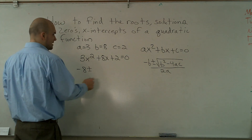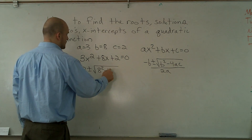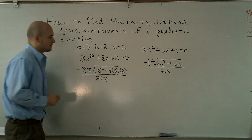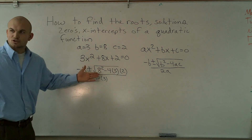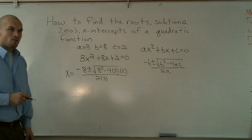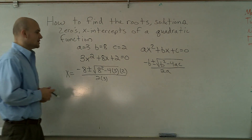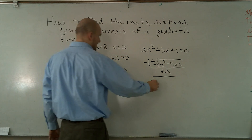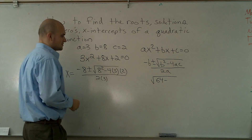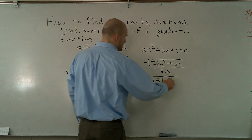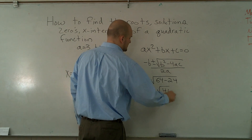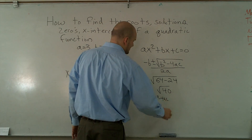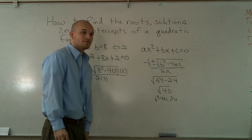Therefore, I have negative 8, plus or minus the square root of 8 squared minus 4 times 3 times 2, all over 2 times 3. One last thing I want to mention is: what does the quadratic formula give you? It's actually what your x-intercepts are — we're solving for x. Next, I'm going to evaluate what's in my discriminant. When I evaluate my discriminant, I have 64 minus 4 times 3, which is 12, times 2 is 24. So 64 minus 24 gives us the square root of 40. Since the discriminant is greater than 0, we're going to have real solutions.